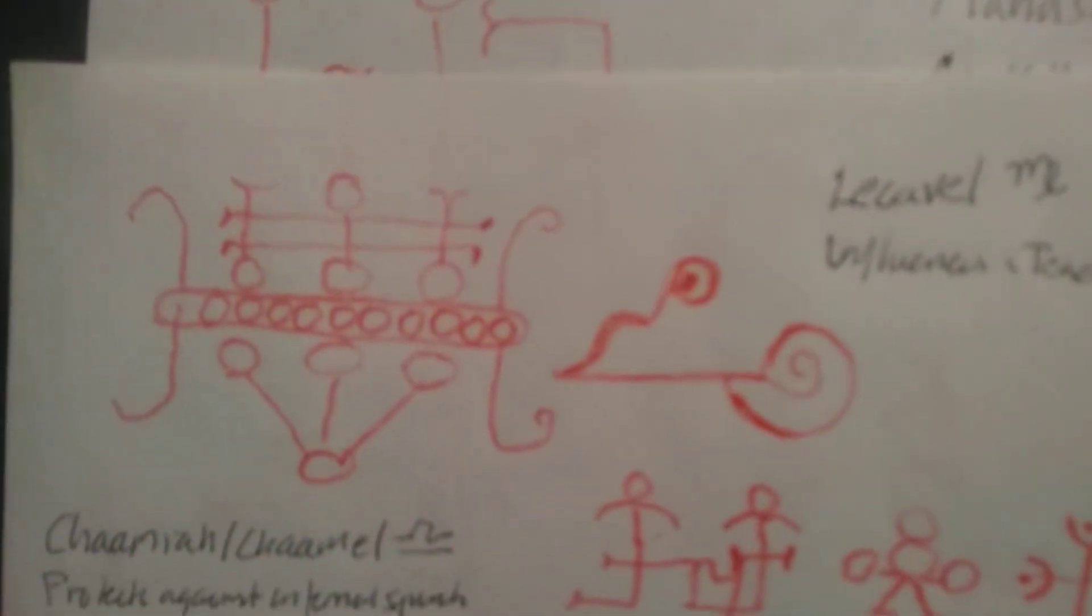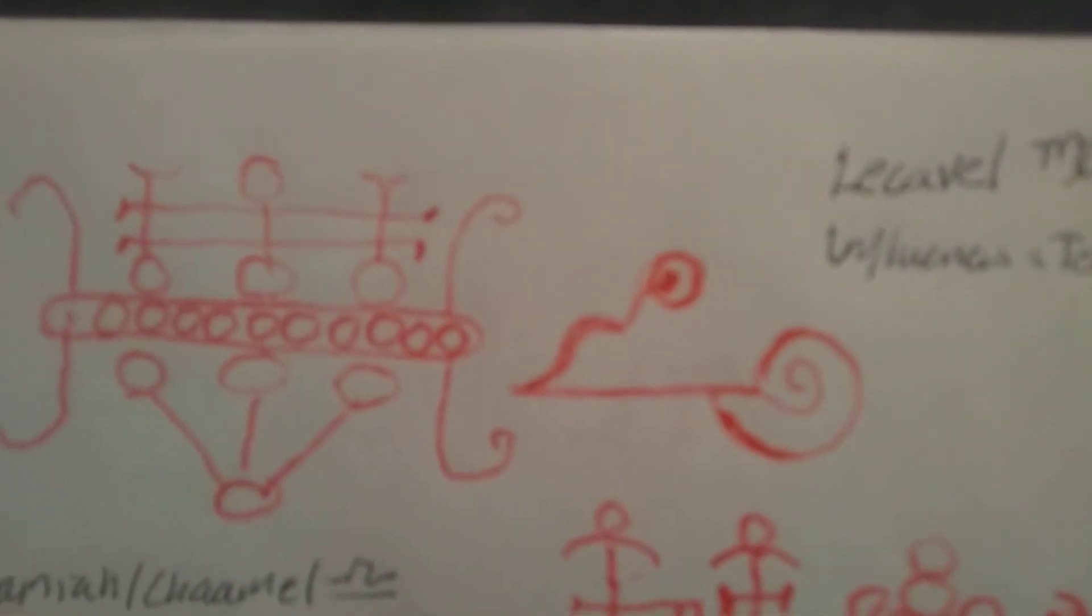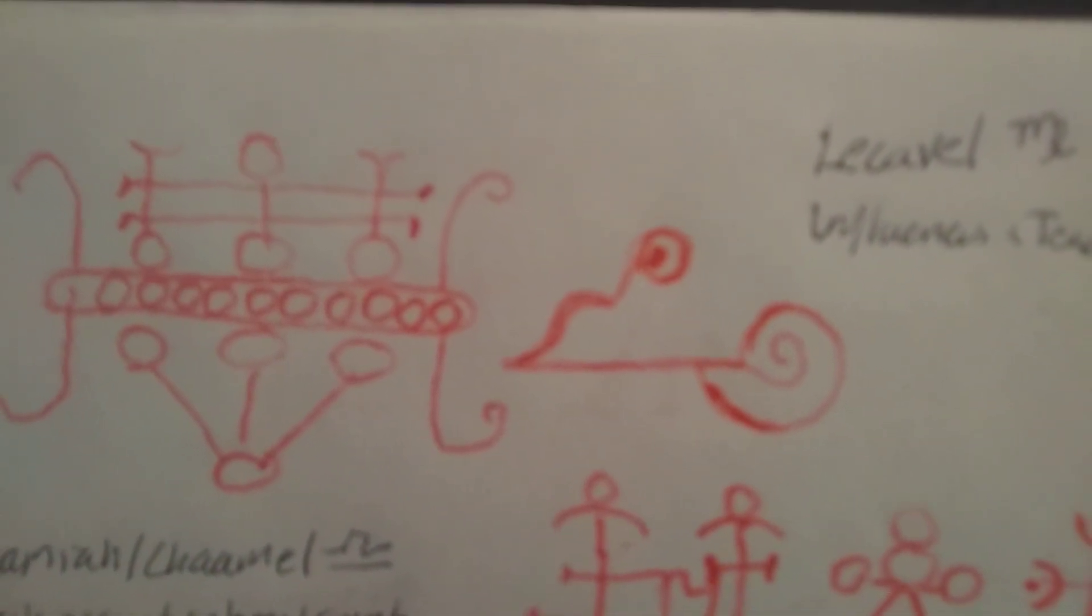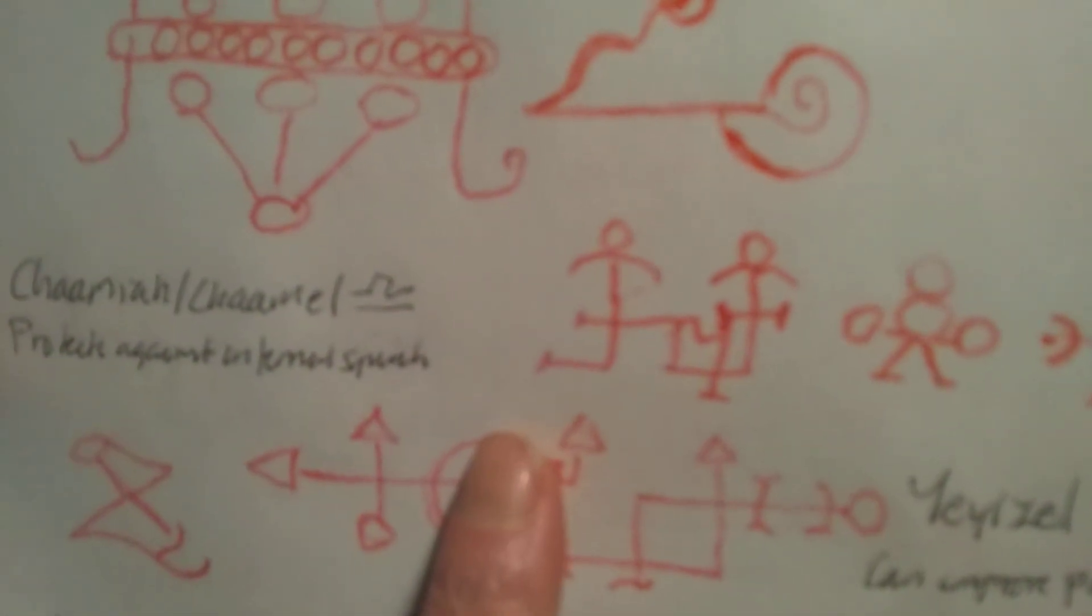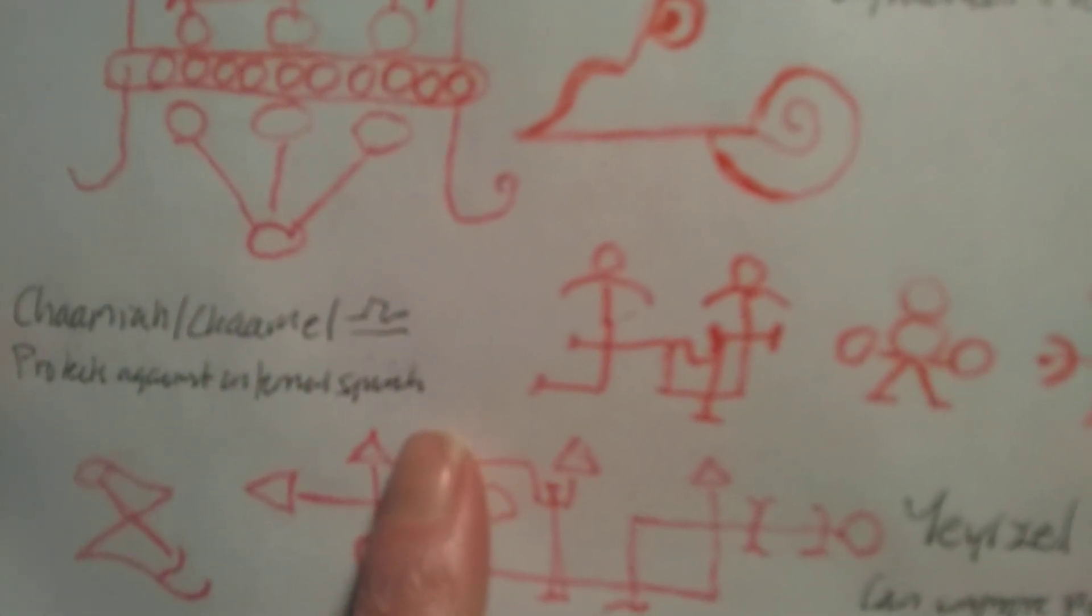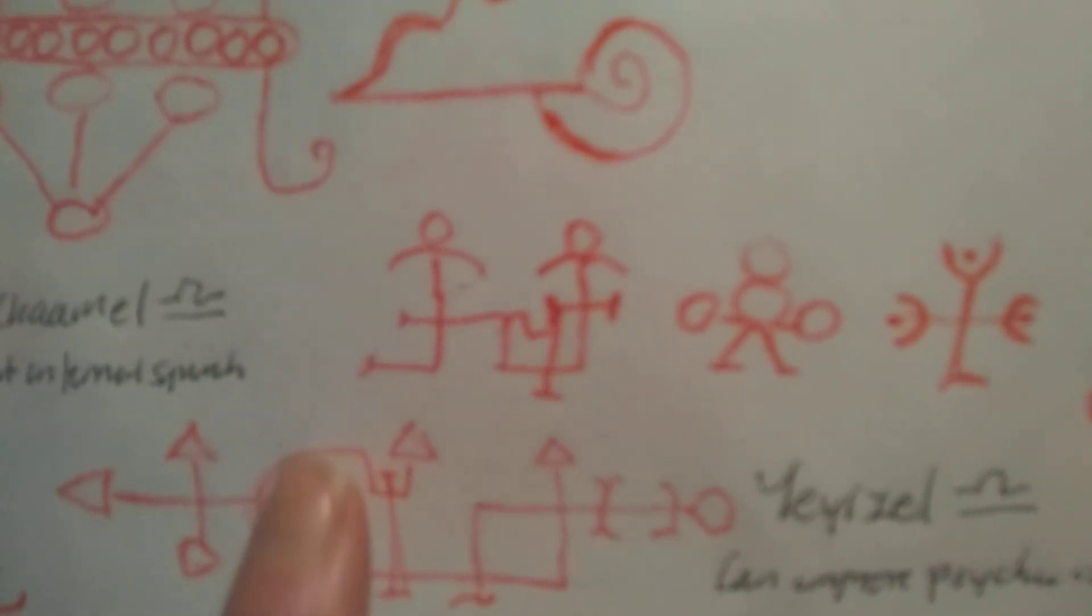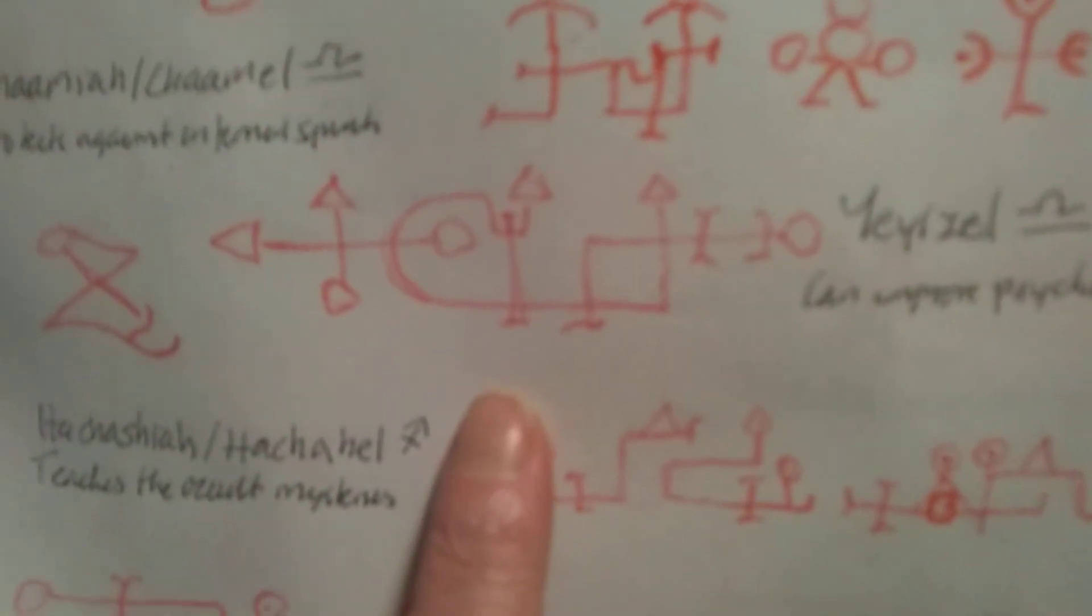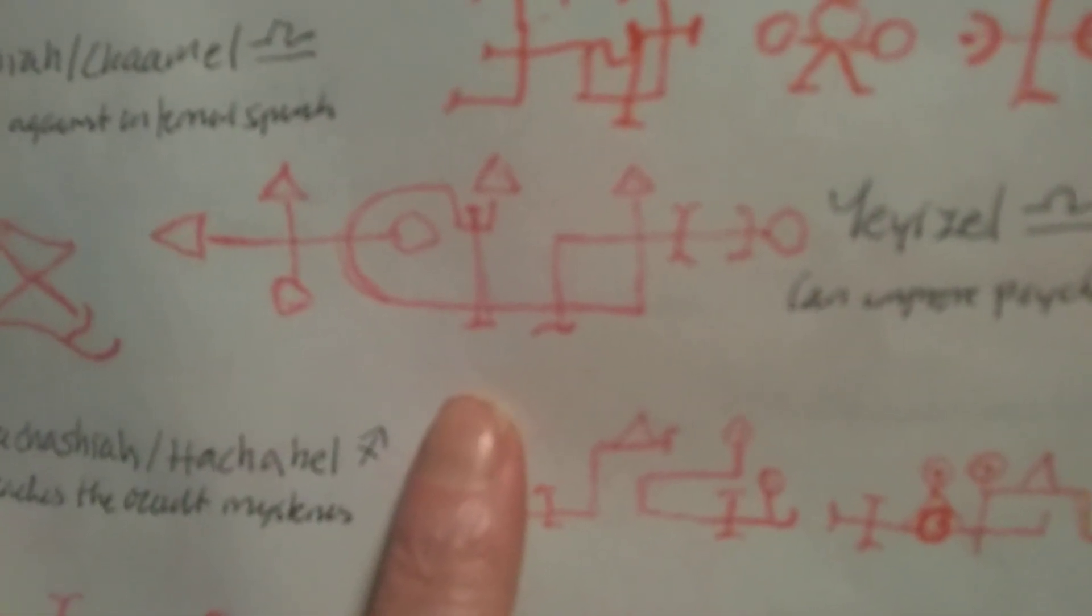Then Lecavel in Virgo, who influences and teaches astrology. Then Chahamia or Chahamel in Libra, who protects against evil infernal spirits. And Jaisel in Libra, who can improve psychic abilities.